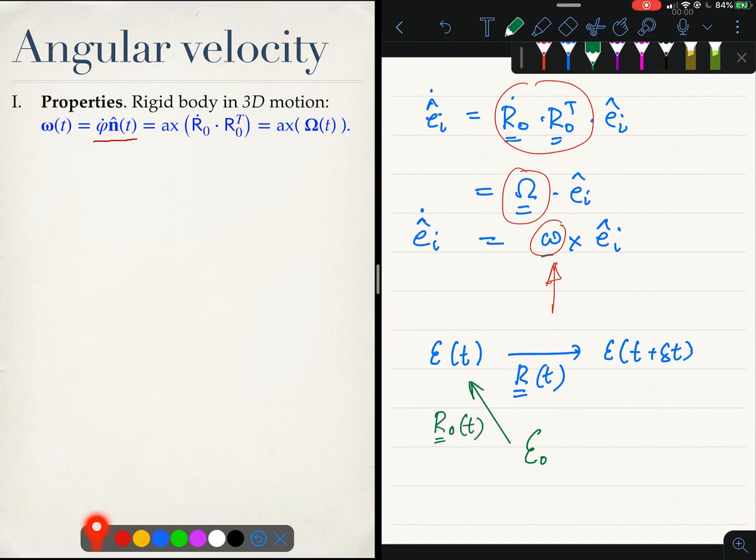For that we derived the formula that the angular velocity is given by the axial vector of this tensor, R0 dot multiplying R0 transpose.